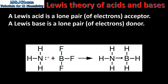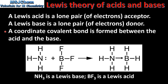NH3 is a Lewis base because it's able to donate the lone pair of electrons to BF3, which is a Lewis acid. A coordinate covalent bond is formed between the acid and the base, which is shown by this arrow here. A coordinate covalent bond is formed when one species provides both the electrons in the bond.